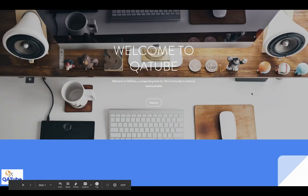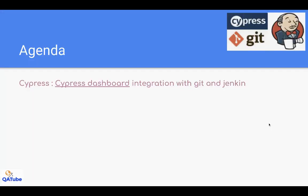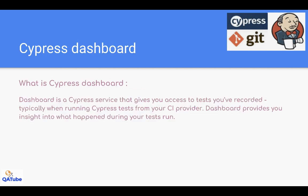Welcome to KivaTube. Today's video is on Cypress Dashboard, one of the great features of Cypress. I will showcase how we can integrate Cypress Dashboard with Git and Jenkins. Cypress Dashboard is a Cypress service that gives you access to tests you have recorded, so we can see everything easily and track all the details. It also gives us insight into what is happening during your test runs.